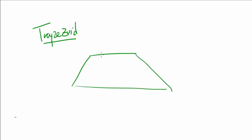Now let's move on to trapezoid. Let's say it looks like this. What can we do with the trapezoid? We can flip this upside down and attach it over to the other side. And what do we have? We have a parallelogram.